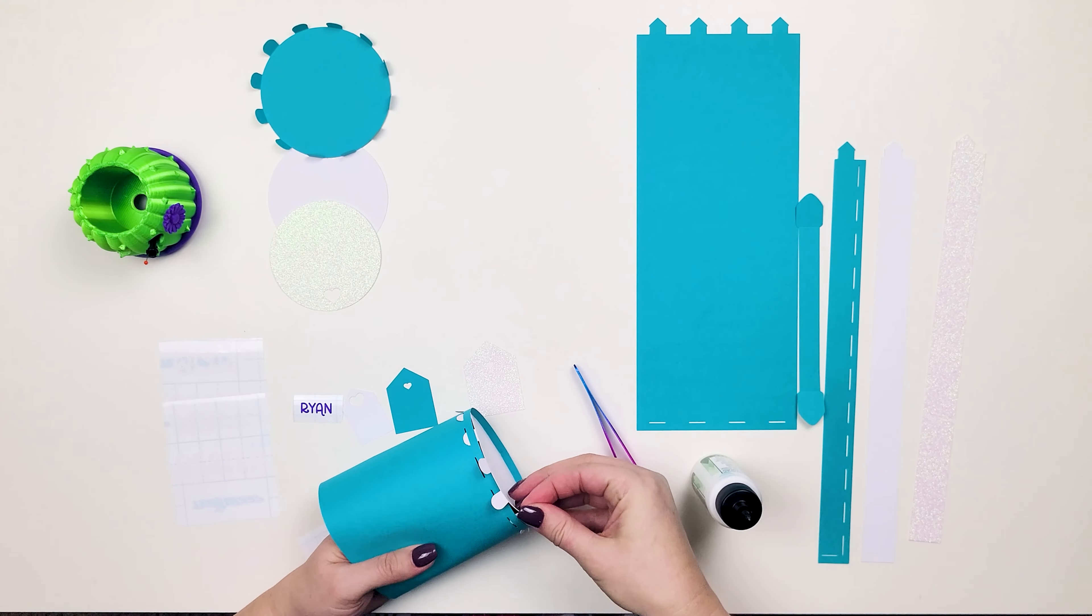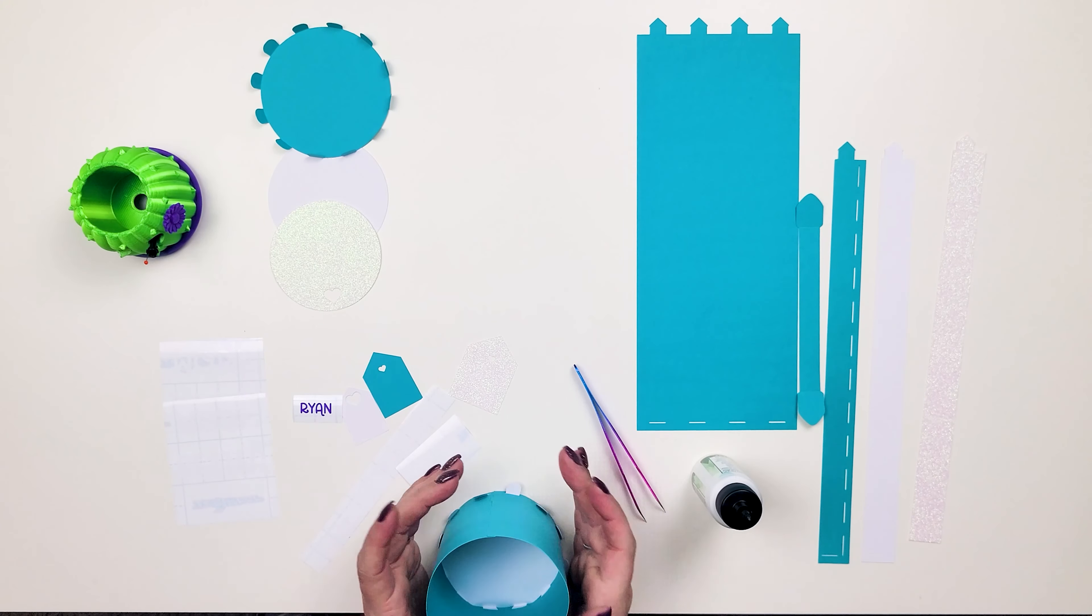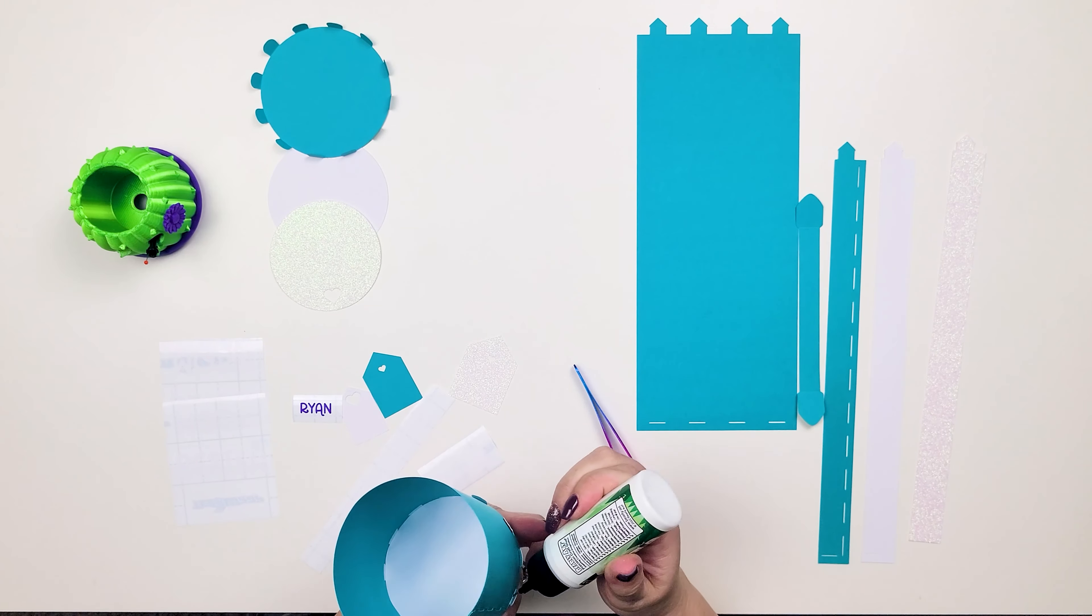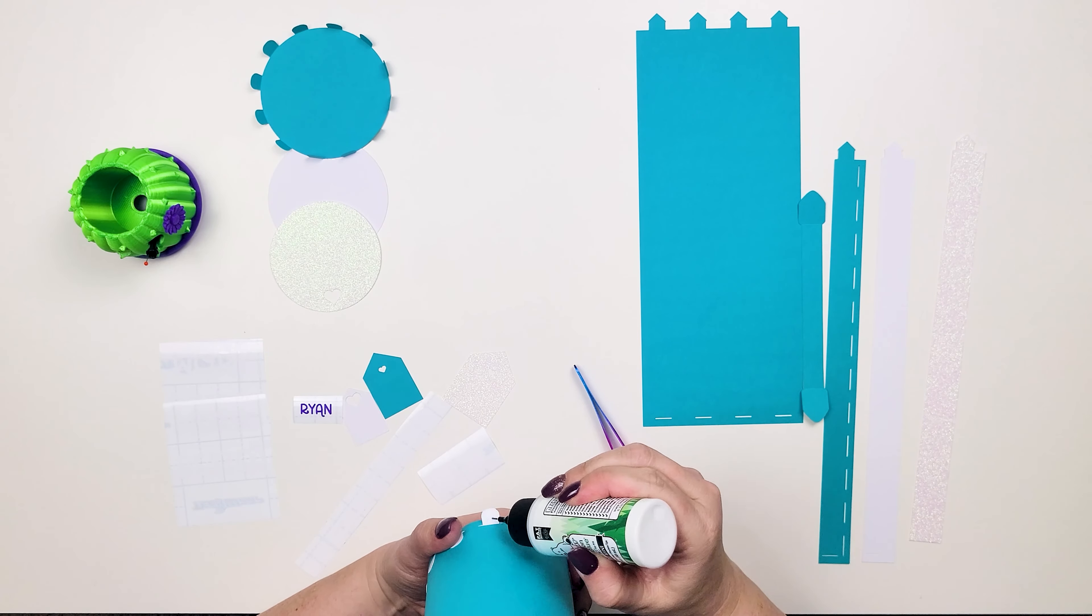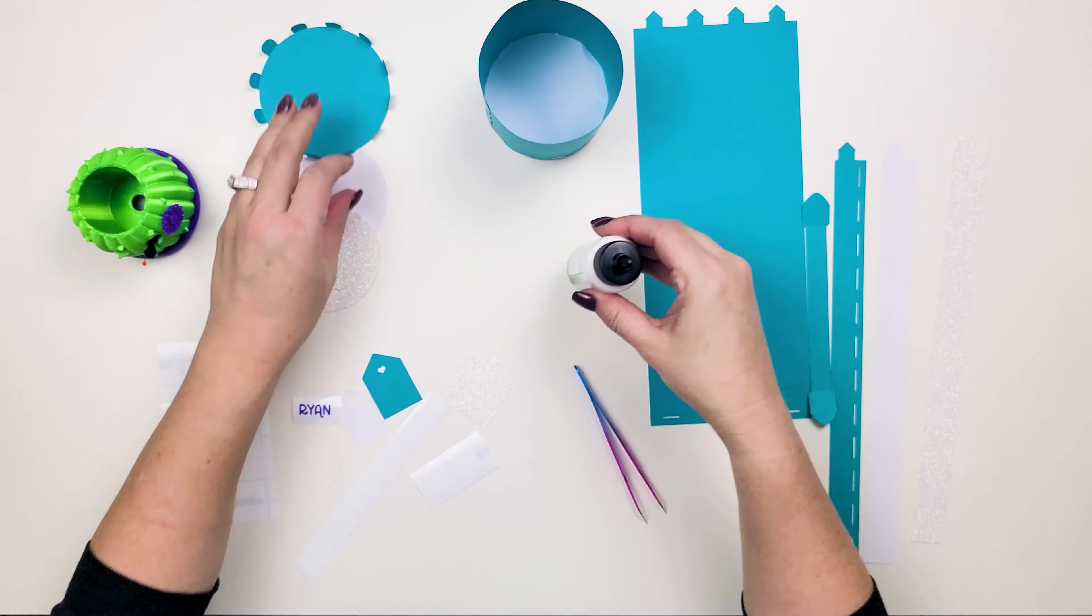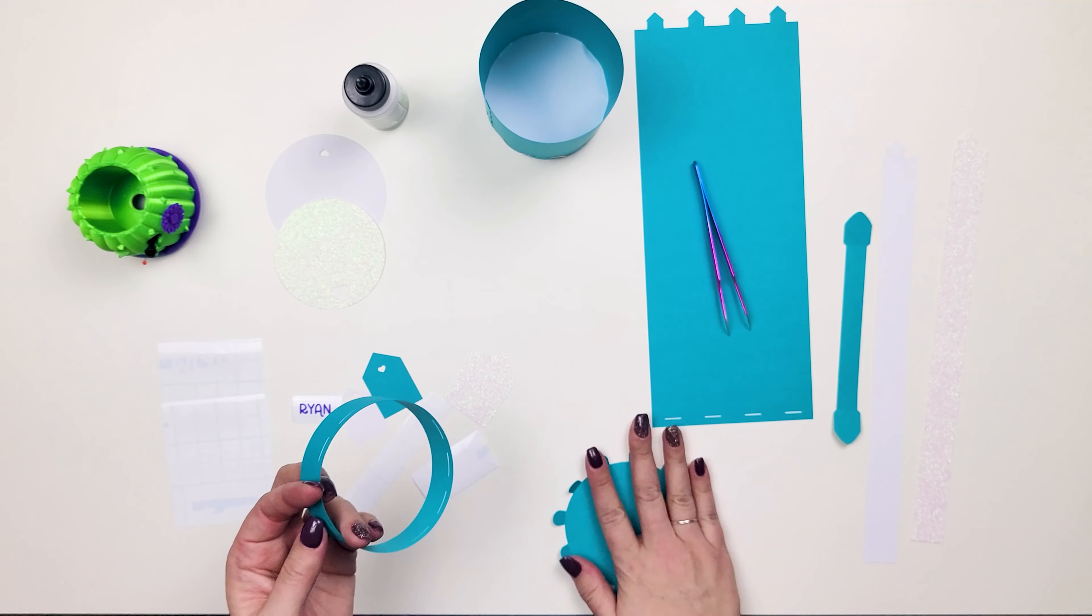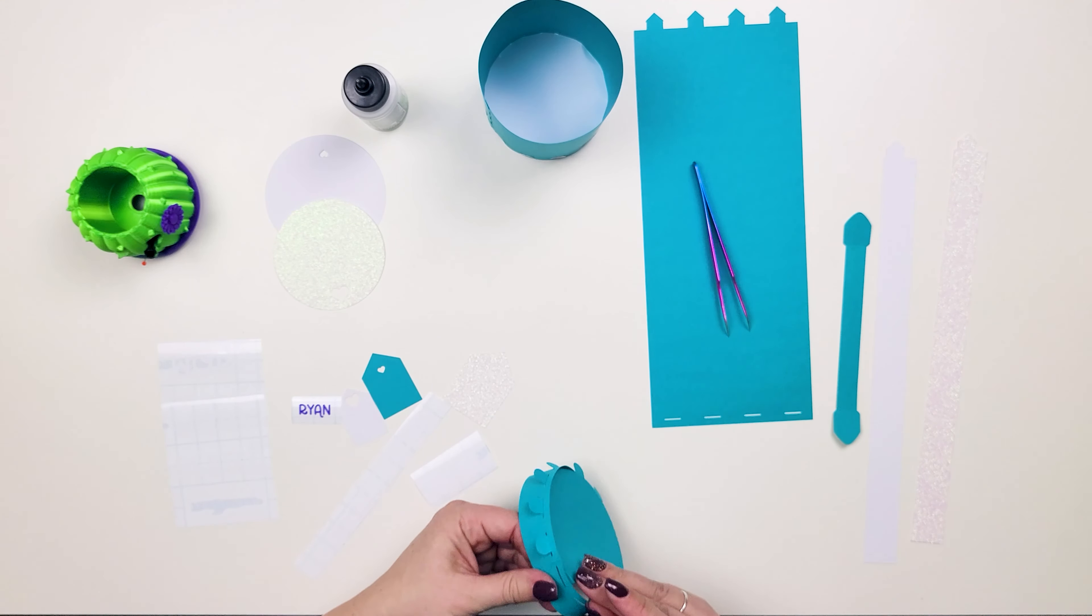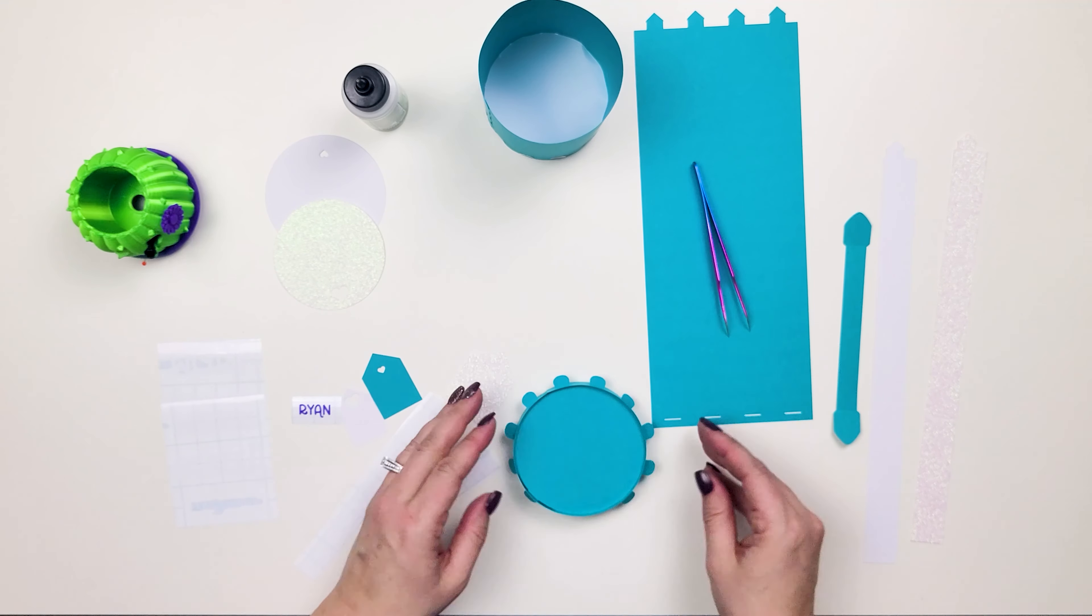I'm pushing the tabs into the slots so that I can glue them in place and secure the bottom of the cup. Now I am going to be putting together the lid of the cup, following those same steps as the main part of the cup, pushing the tabs through, gluing those little tabs down.